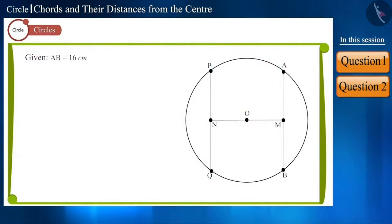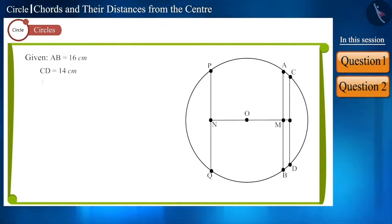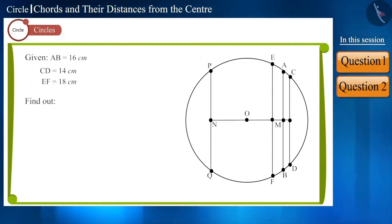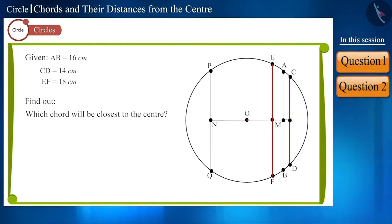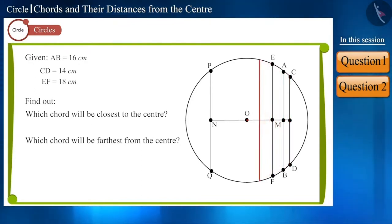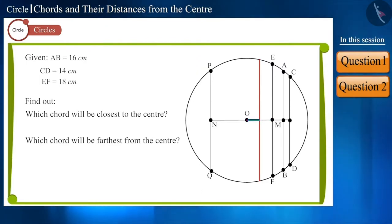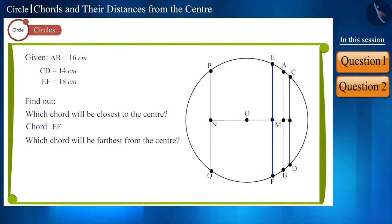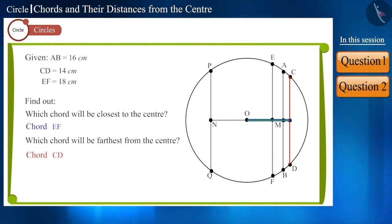In this figure, if we draw a chord CD whose length is 14 cm and a chord EF whose length is 18 cm, which chord will be closest to the center and which will be farthest? We know that the closer we move to the center, the length of the chord increases, but their distance from the center decreases. So chord EF, which is the largest chord, will be the closest to the center, and chord CD, which is the shortest, will be the farthest from the center.